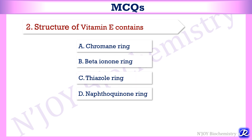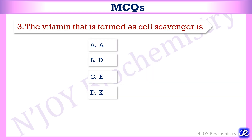Second MCQ: the structure of vitamin E contains — chromane ring, beta-ionone ring, thiazole ring, or naphthopinol ring? The answer is chromane ring, because vitamin E has a chromane ring. Third MCQ: the vitamin termed as 'cell scavenger' is vitamin A, D, E, or K? It is vitamin E — so the answer is C.